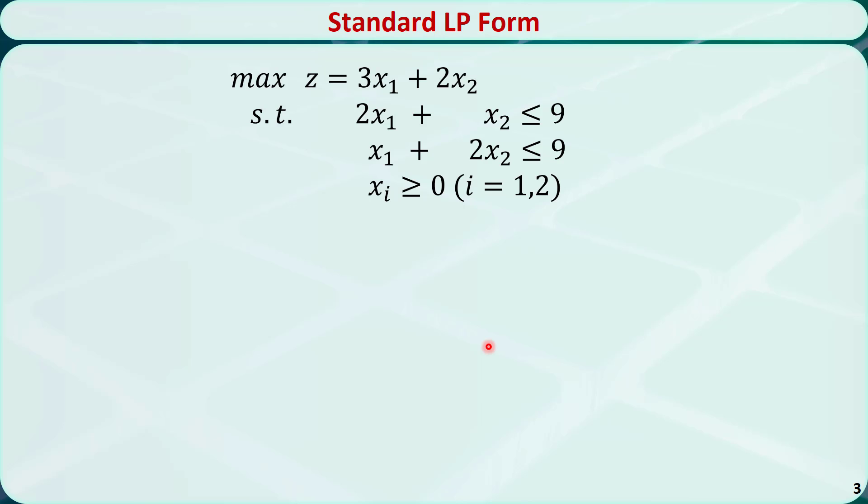Let's take a look at this example. It has two variables. They are both non-negative, so it satisfies the second condition. But right now we have two inequality constraints. They are both less than or equal to the right-hand side.